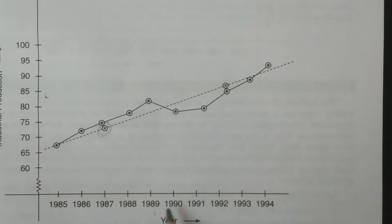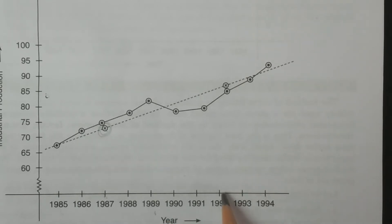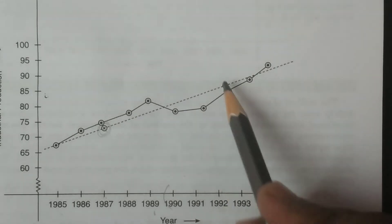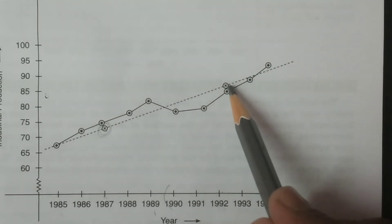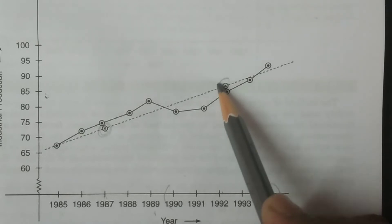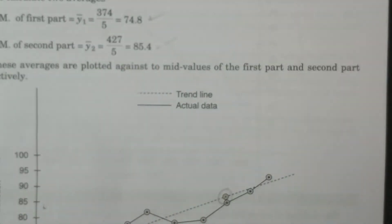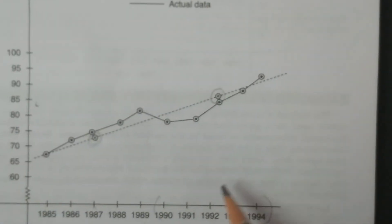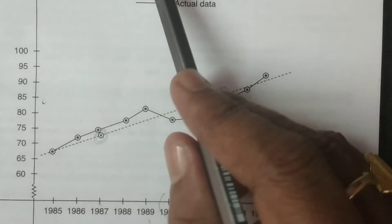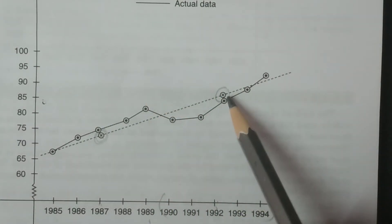For the next part, the middle period is 1992. Against that middle period 1992, we have to plot the point. The value is 85.4. Against this period, you have to plot the arithmetic mean 85.4 here.